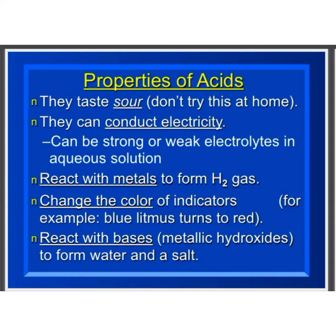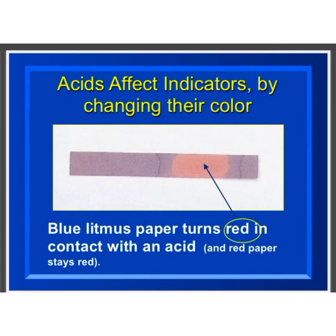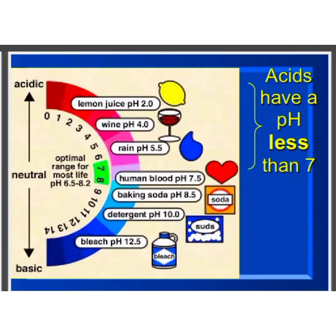Properties of acids: they have a sour taste, they conduct electricity, they react with metals, and they change the color of indicators. Acids affect indicators by changing their color — they turn blue litmus paper red. Acids have a pH less than 7.